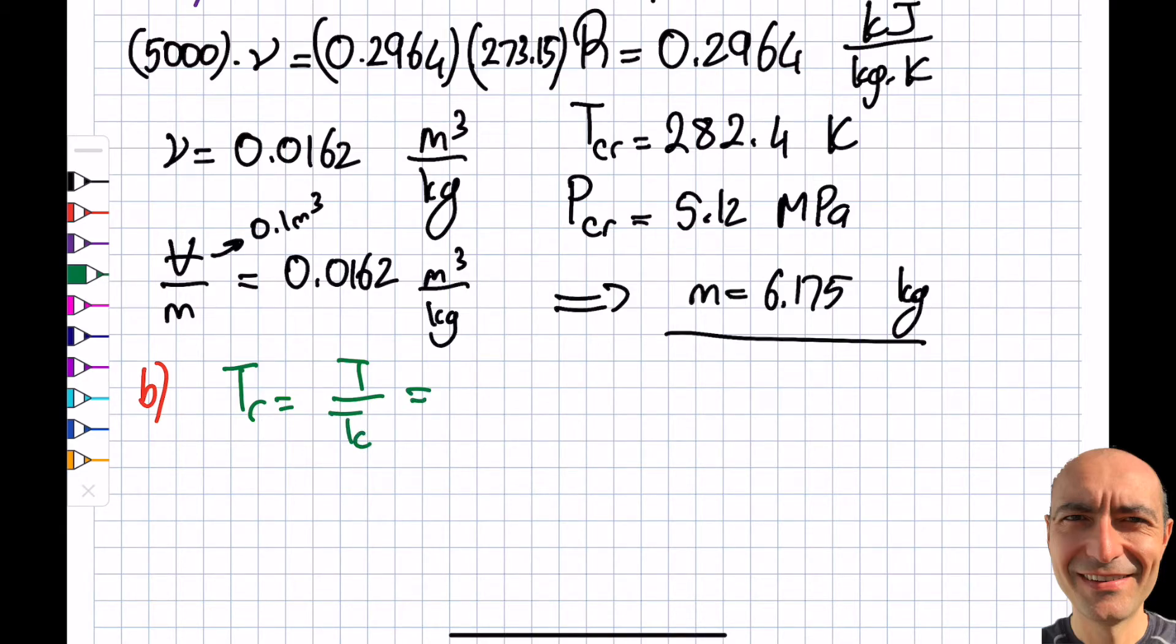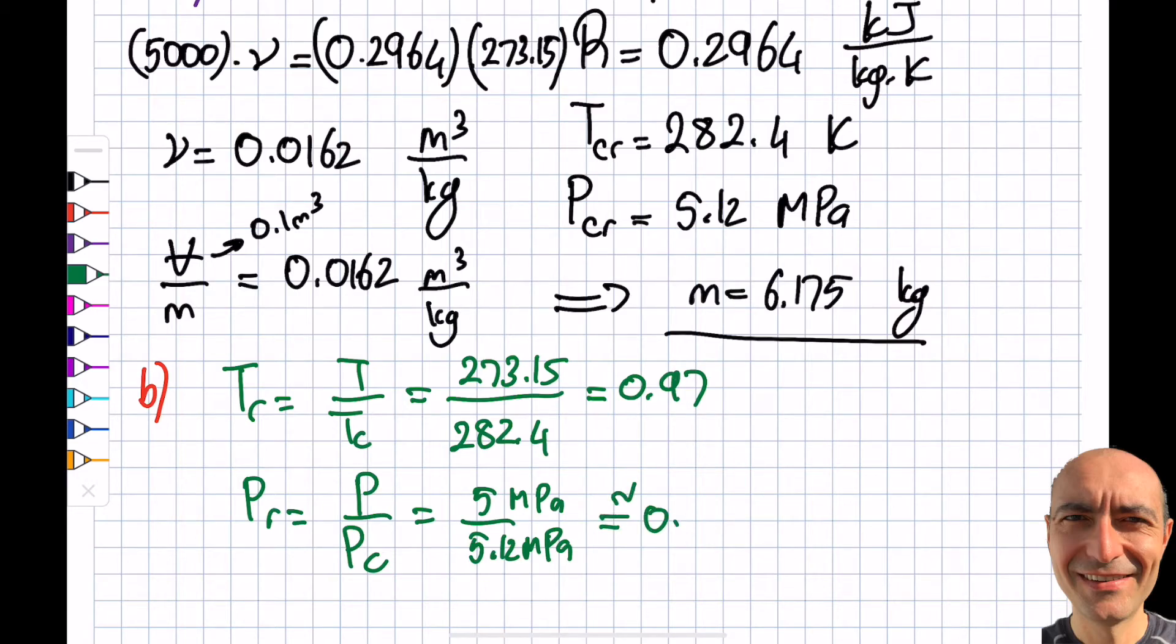Tr will equal T divided by T critical. The T here is in kelvins because T critical is also given in kelvin, so I get around 0.97. Then we do the same treatment for pressure: P divided by Pc equals five megapascals divided by 5.12 megapascals, which is also around 0.97.